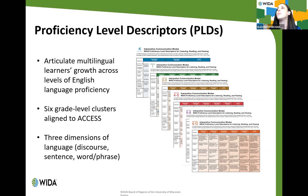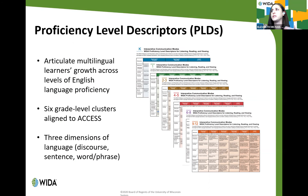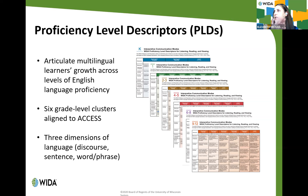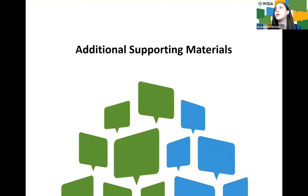Proficiency level descriptor charts articulate what multilingual learners' growth might look like across the six levels of English language proficiency. They are aligned to the six grade-level clusters used for ACCESS and broken out into three dimensions of language: discourse level — including organization, coherence, and language density; sentence level; and word/phrase level. These continua allow educators to identify where a given student currently is in their language development and what they want that student to be able to do.